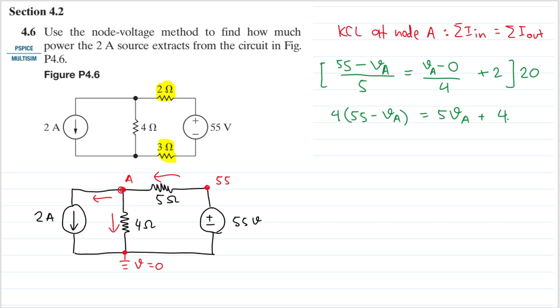So now we will have 4 multiplied by 55, that should be 220, and then minus 4 VA. And that will equal to 5 VA.